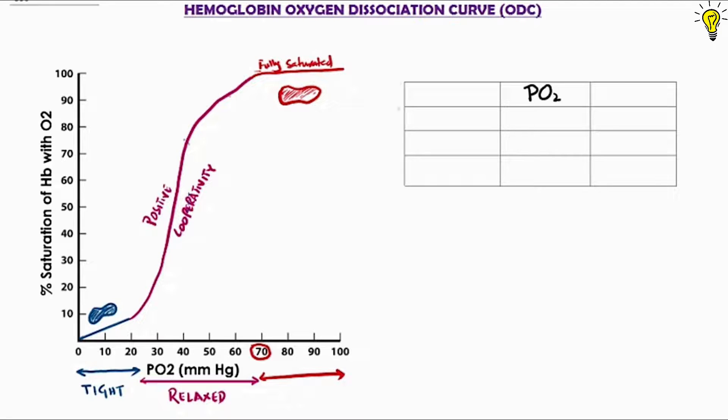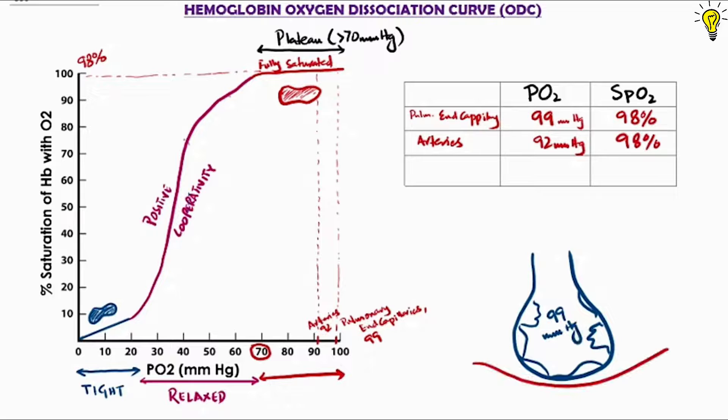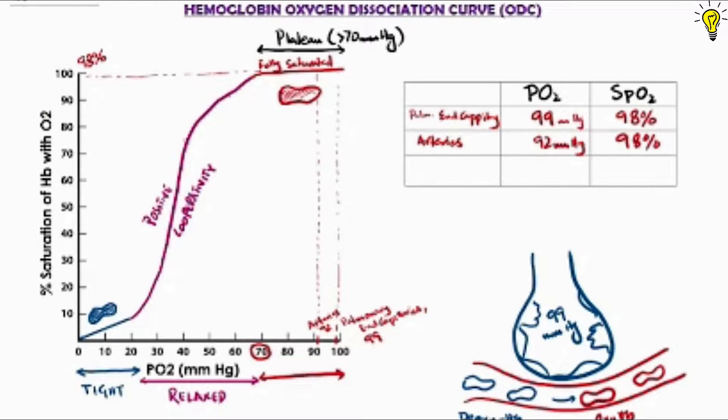Now observe the upper plateau phase of dissociation curve. Saturation in pulmonary capillary and artery will remain around 98 to 100% despite mild differences in PO2 levels. So what is the clinical relevance of this plateau phase? Well, at alveolar level, we know that oxygen pressure in alveoli normally is around 99 mmHg, where deoxyhemoglobin comes in and receives oxygen until fully saturated hemoglobin moves out.